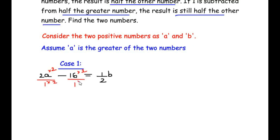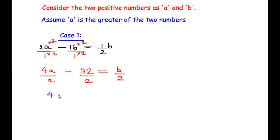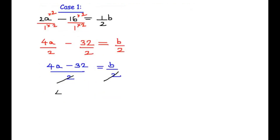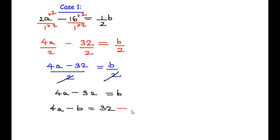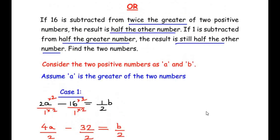Since denominators on both sides are the same, we cancel them and get 4a − 32 = b. Taking letters to one side and numbers to the other: 4a − b = 32. Let us consider this as equation 1.